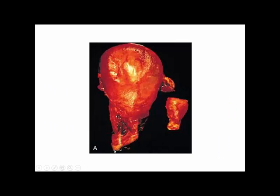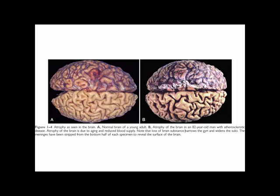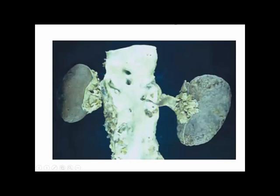These are some examples of atrophy illustrated visually. A normal-sized uterus, an enlarged uterus in pregnancy, and an involuted uterus returning to normal size — that is physiologic atrophy. Atrophy of the brain in an 82-year-old man due to atherosclerotic disease shows widened sulci (grooves/furrows) and narrowed gyri. Atrophy of the kidney, probably due to renal artery stenosis, shows decreased kidney size compared to the other side.